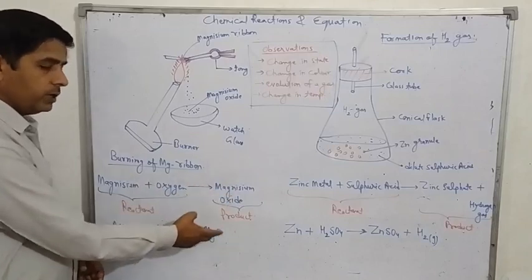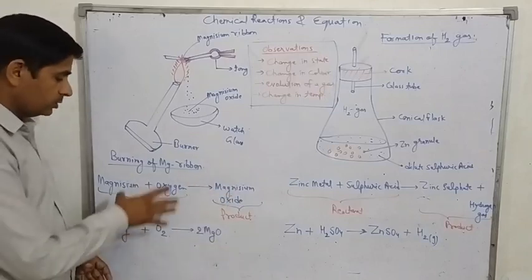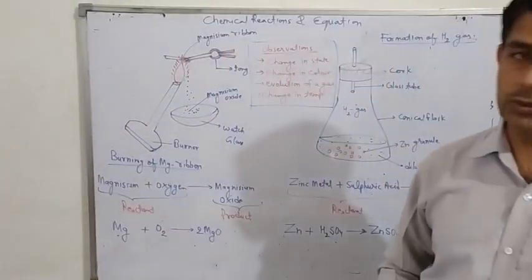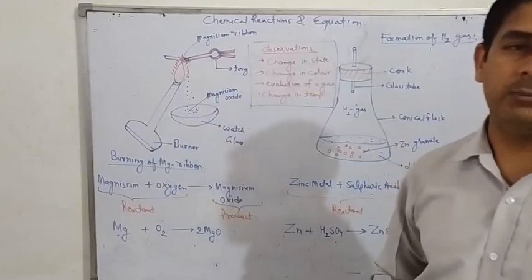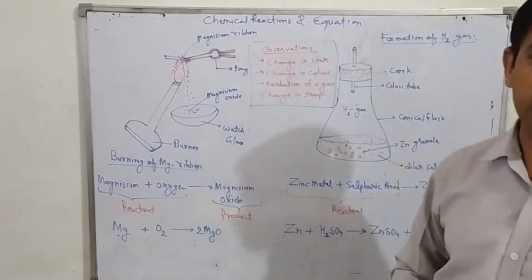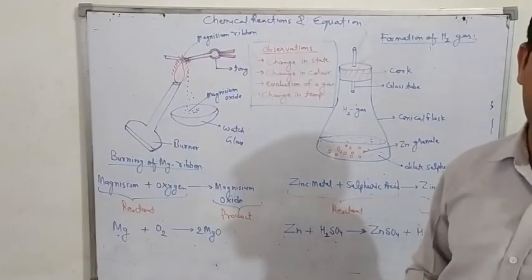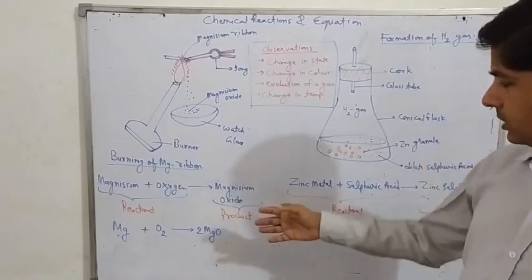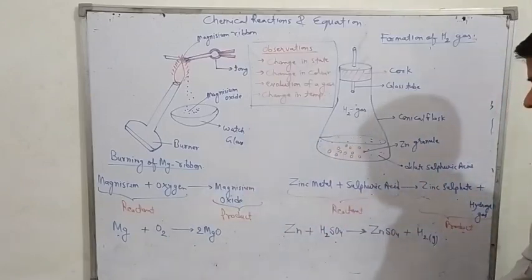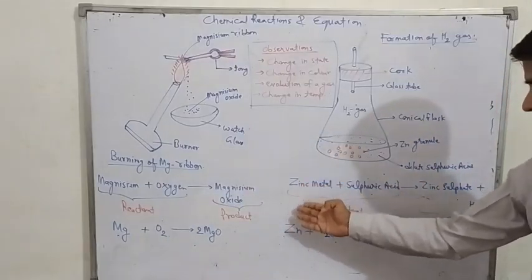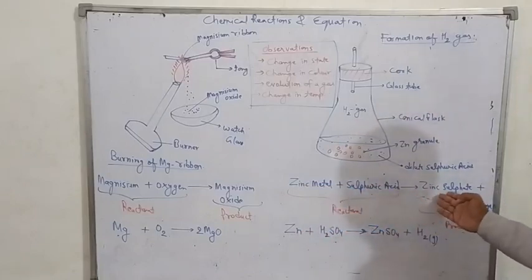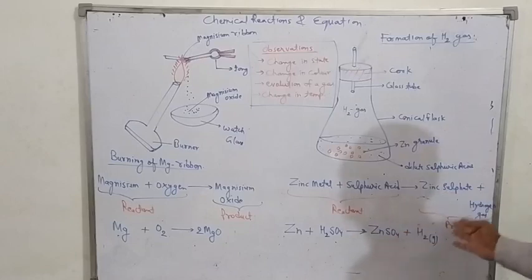When you write it in symbolic form — a symbolic chemical equation — for example, Mg + O₂ → MgO, this is called a chemical equation or chemical reaction. Similarly, on the right-hand side, zinc (Zn) reacts with sulfuric acid (H₂SO₄), and the product is zinc sulfate and hydrogen gas.